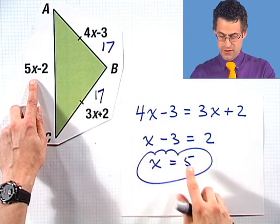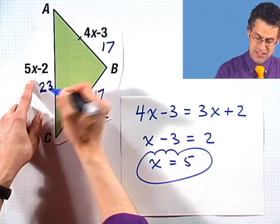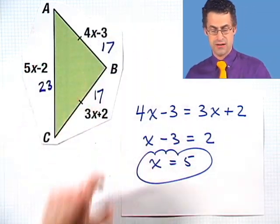And finally, what's this length? We plug in 5. We have 5 times 5 is 25, minus 2 is 23. And just using that extra little piece of information, besides these relationships, we can actually find the lengths of every single side of this fancy, really cool green triangle. Excellent.